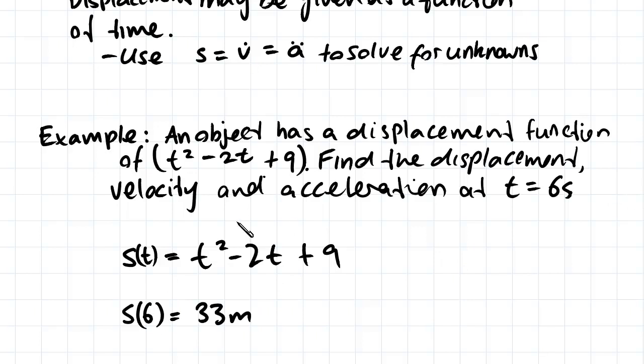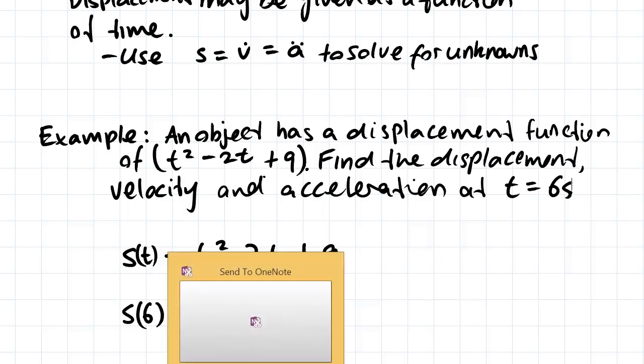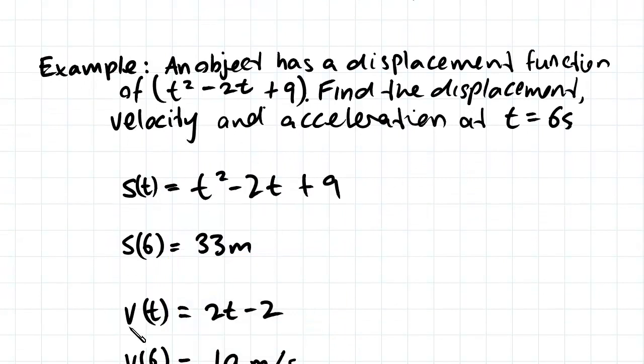To work out velocity now we're going to derive this equation. We're going to find the derivative of this equation and that's v(t).